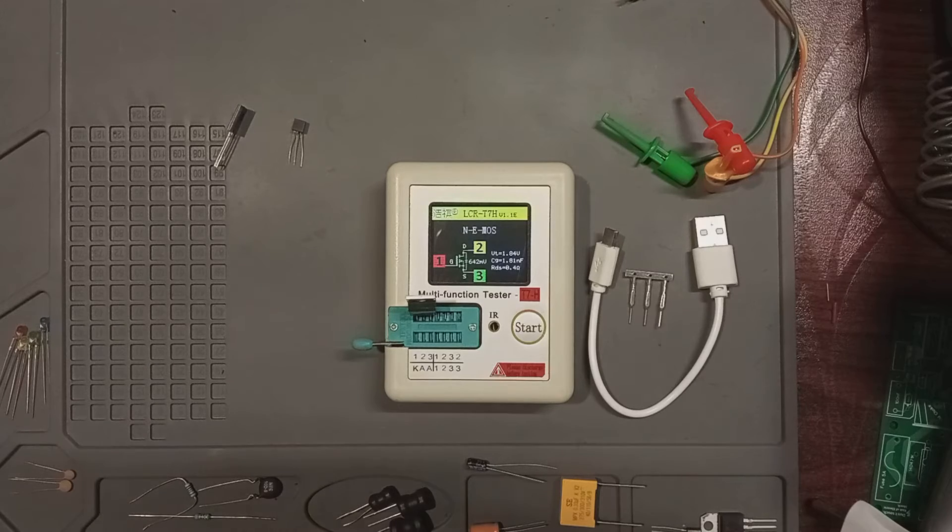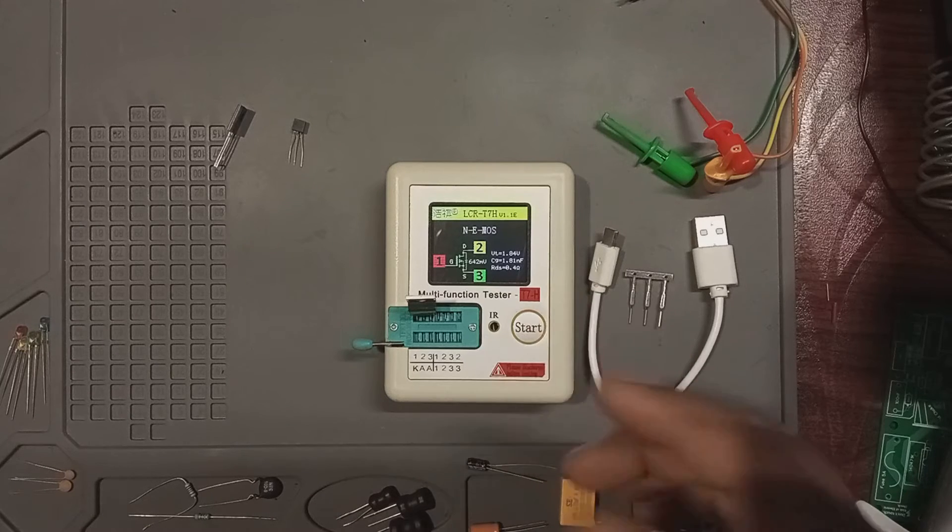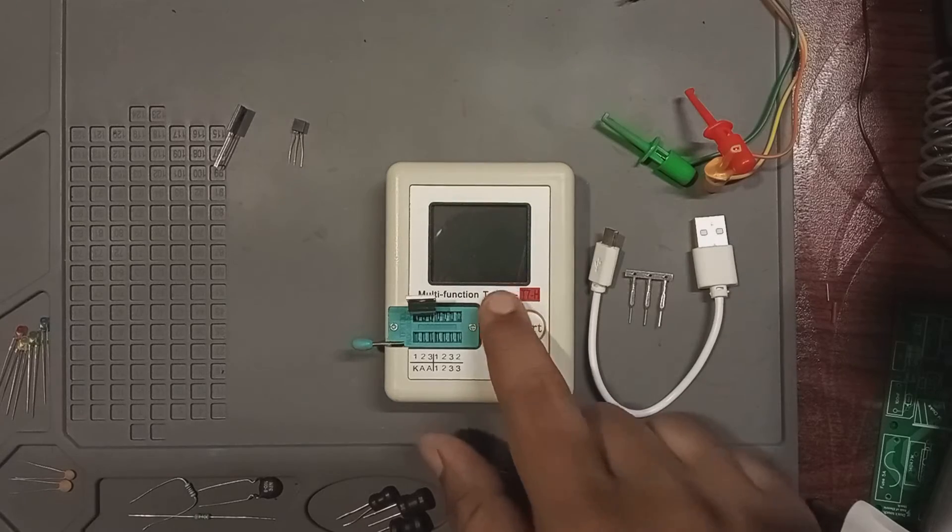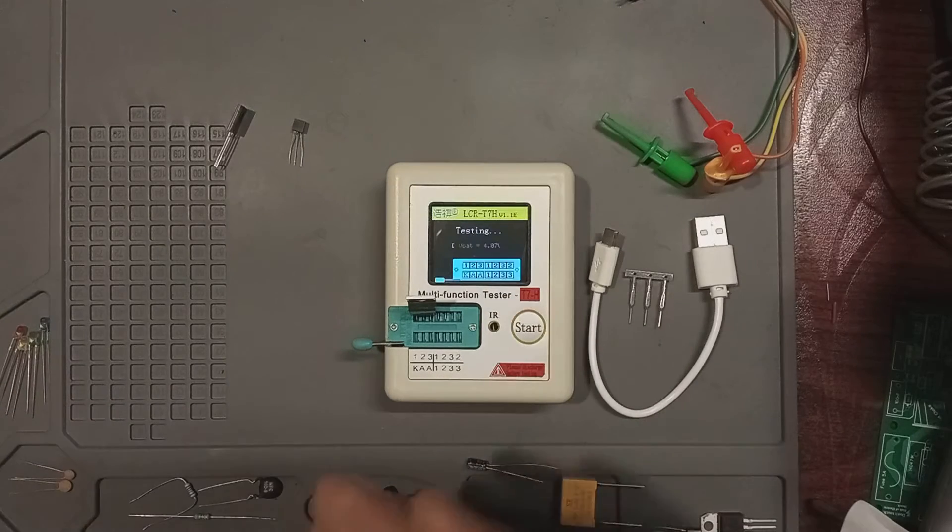The meter displays the RDS on, representing the resistance between the drain and source. We also see values like the gate capacitance labeled as CG. What if we flip the MOSFET? The meter handles it with no issue at all.